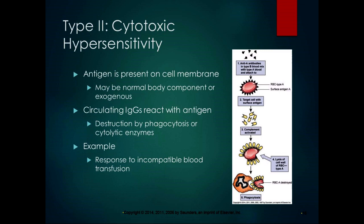Type 2 is cytotoxic hypersensitivity, where the antigen is present on a cell membrane — it might be a normal body component or it might be exogenous. Circulating IgGs react with the antigen and destroy it by phagocytosis or cytolytic enzymes. This is what happens in an incompatible blood transfusion, which is why type O blood is considered the universal donor — type O red blood cells do not have any antigens on them, so you won't get a type 2 cytotoxic hypersensitivity response.